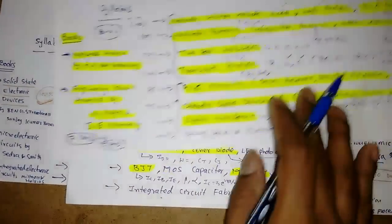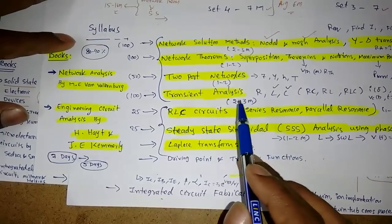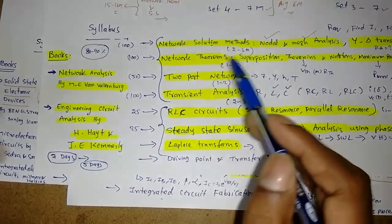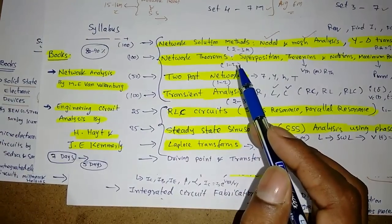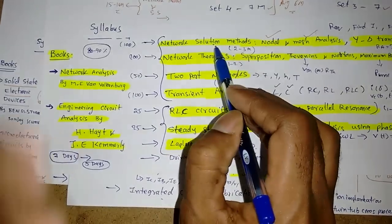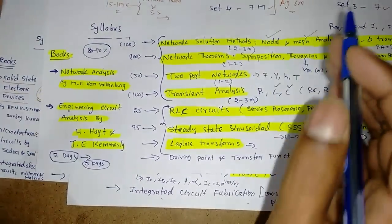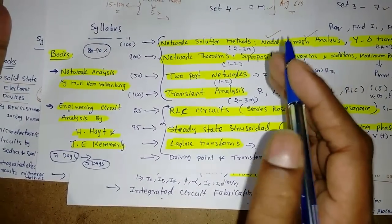Similarly two-port parameters also, transient analysis also. So prepare, you can prepare from the previous question papers also. Take from the network solution methods. What are the problems? Approximately 60 to 70 problems are given, do those problems. You have to maintain one book copy.